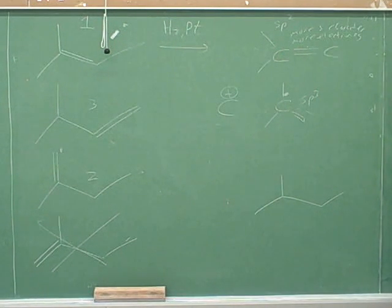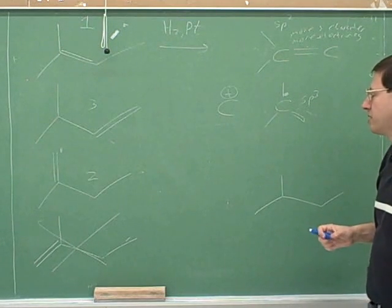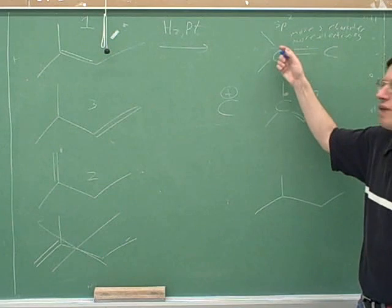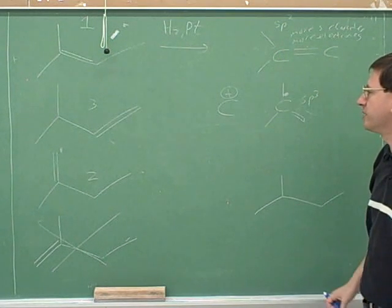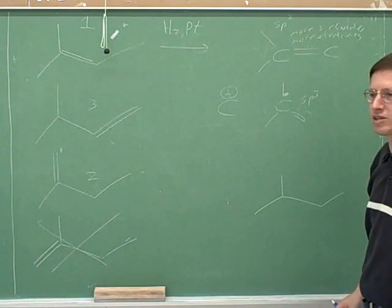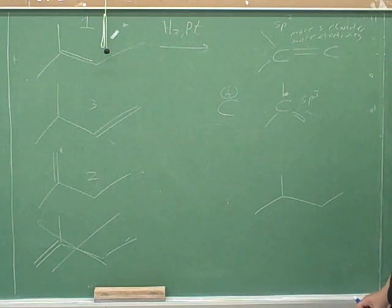So now we know that substitution with alkyl groups, because alkyl groups are electron-donating, substitution with alkyl groups stabilizes carbocations, radicals, and alkenes. That's a good note to have in your notes. You'll be using that for the whole rest of the course next semester as well. Substitution with alkyl groups stabilizes carbocations, radicals, and alkenes.